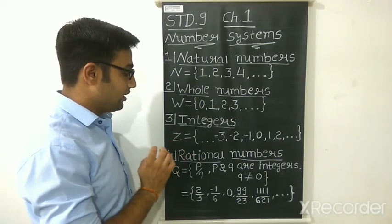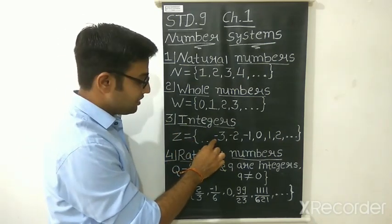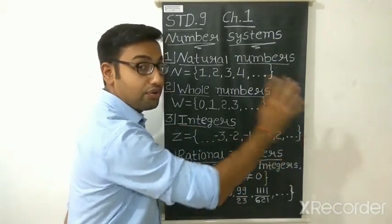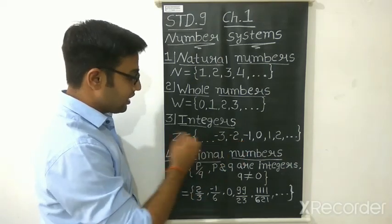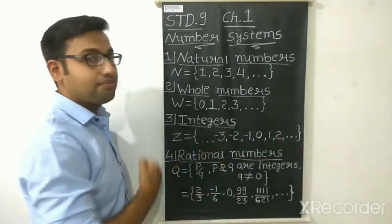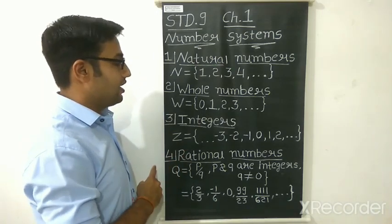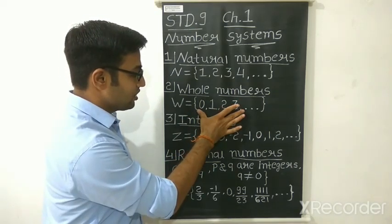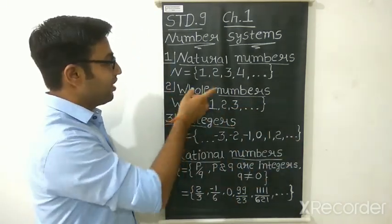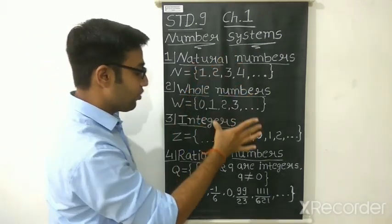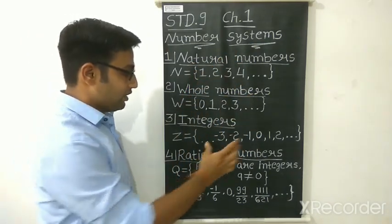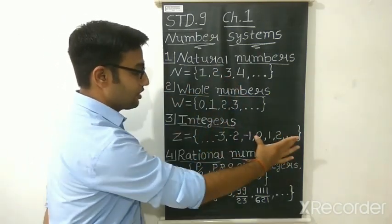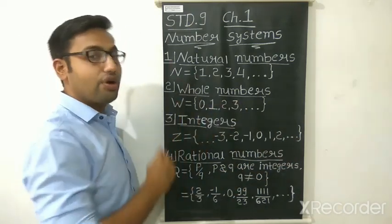The third type is integers. Integers contain all minus numbers: minus 3, minus 2, minus 1, 0, 1, 2, and up to infinite on both sides. This set has infinite numbers on both the plus side and minus side. So we can say all whole numbers are integers, and all natural numbers are also integers. But all integers are not whole numbers — only some of the integers are whole numbers.